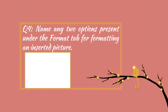Question four: Name any two options present under the Format tab for formatting an inserted picture. When you insert a picture and want to format it, the Format tab opens. Various options are available — I suggest writing any four options. These include: Picture Border, Wrap Text, Rotate, Crop, Picture Effects, Picture Styles, and Artistic Effects.